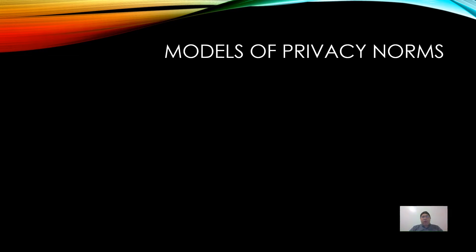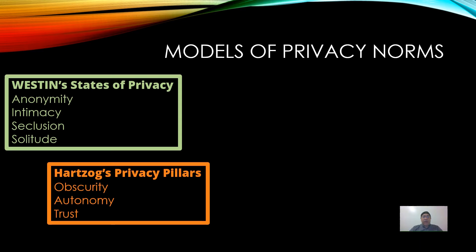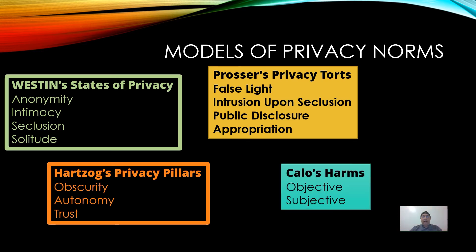There are numerous models of social norms that abound. Alan Westin has his states of privacy: anonymity, intimacy, seclusion, and solitude. Woody Hartzog recently wrote in his book Privacy's Blueprint his three privacy pillars of obscurity, autonomy, and trust. Prosser, the famed torts professor, had his privacy torts of common law: placing somebody in a false light, intrusion upon seclusion, public disclosure of private facts, and appropriation of name and likeness. And Ryan Calo has his objective and subjective harms. The ones on the left with the black background are more positive things — privacy values or norms that we as a society aspire to. The ones on the right, the privacy torts and Calo's harms, are harms we want to try to avoid.